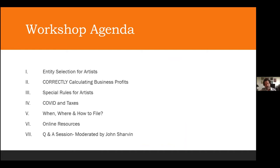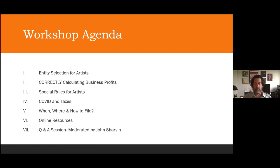What we're going to cover: we'll talk about entity selection, because some of you have incorporated, other people are just filing a Schedule C. We're going to find out how to correctly calculate your business profits, whether you're a Schedule C or a corporation. There are some special rules for artists we want to highlight, COVID and taxes, and then I'll help you with specifics on when, where, and how to file, some online resources, and John will moderate the Q&A session.